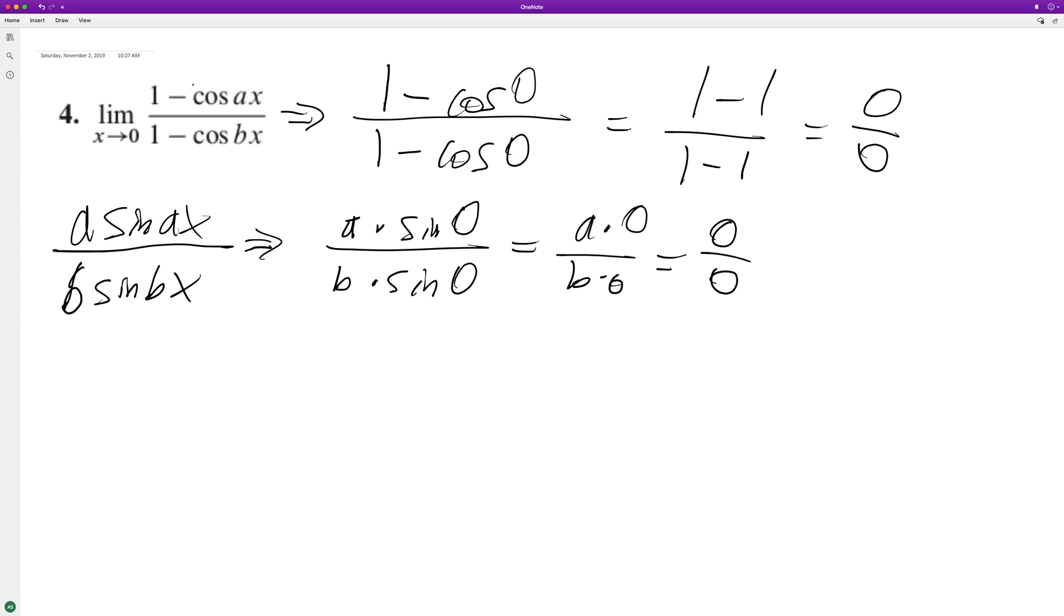But with L'Hôpital's rule, we can take the derivative again. So when we take the derivative again, a is still considered a constant, so be careful you're not using the product rule. It's a constant, so again a squared because a times a.